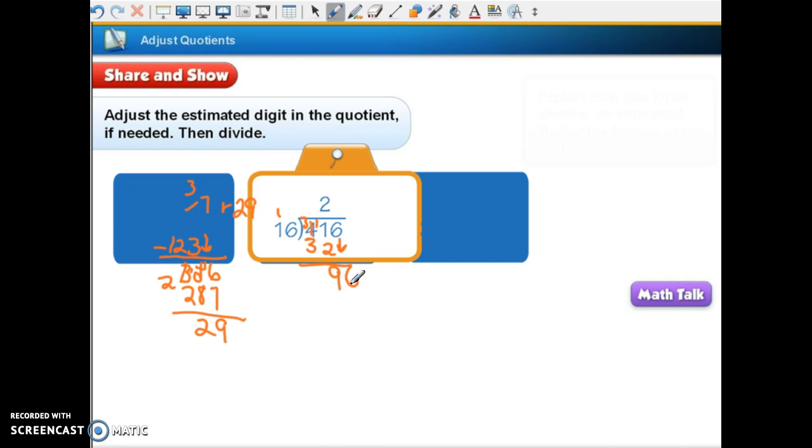Can I bring down my 6 and I get 96. How many tens in 90? 9. Let's try that. I rounded this to 10. 9 times 6 is 54. Then 9 times 1 is 9 plus 5 is 14. Whoa, did that work very well? No.